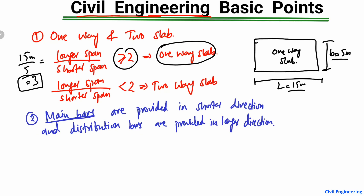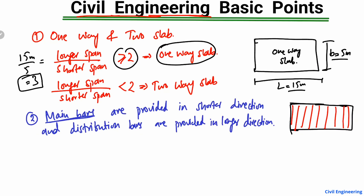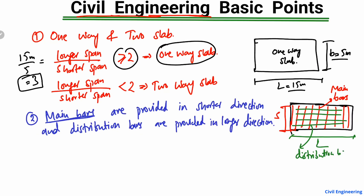The main bars are always provided in the shorter direction — I'll call it 'S' for shorter. The bars provided on top of the main bars are known as distribution bars, and these distribution bars are provided in the longer direction — I'll call it 'L' for longer. So the main bars run along the short span and distribution bars sit on top along the long span.